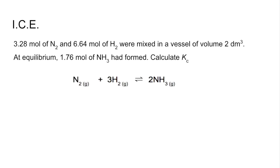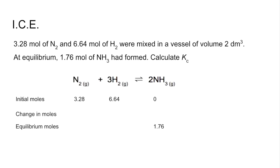In this worked example, we're given initial moles of nitrogen and hydrogen, a reaction vessel volume of 2 dm³, and told that at equilibrium there are 1.76 moles of ammonia. Using the ICE method: Initial moles are 3.28 for nitrogen, 6.64 for hydrogen, and 0 for ammonia. At equilibrium, ammonia is 1.76 moles, meaning the change is +1.76. For nitrogen, half as much reacts to produce the ammonia, so it drops by 0.88.